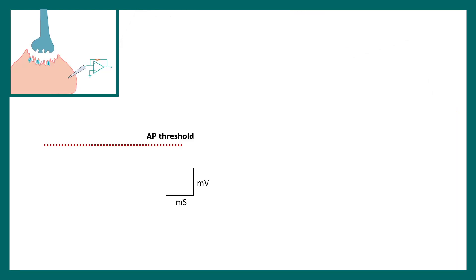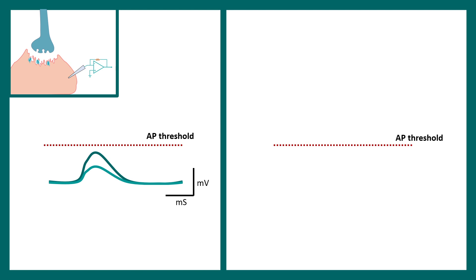Let's understand this using electrophysiological signatures. If the post-synaptic potential has a small magnitude, it remains well below the action potential threshold and the muscle does not contract. Even a second PSP that does not cross the threshold produces no contraction. In a third scenario, a stronger stimulus leads to a larger jump that crosses the action potential threshold, and the action potential is fired and the muscle contracts.